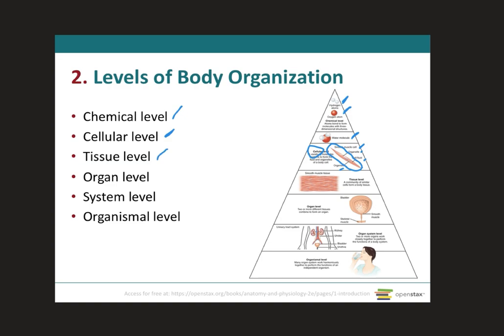Next we have the tissue level. Like the name says, cells are going to come together to form tissues. In this case, smooth muscle cells came together to form smooth muscle tissue. These are groups of similar cells and the materials that surround them, which usually have similar embryological origins and therefore perform specialized functions. There are four different types of tissues: epithelial tissue, connective tissue, muscular tissue, and nervous tissue — which we will cover in module two.